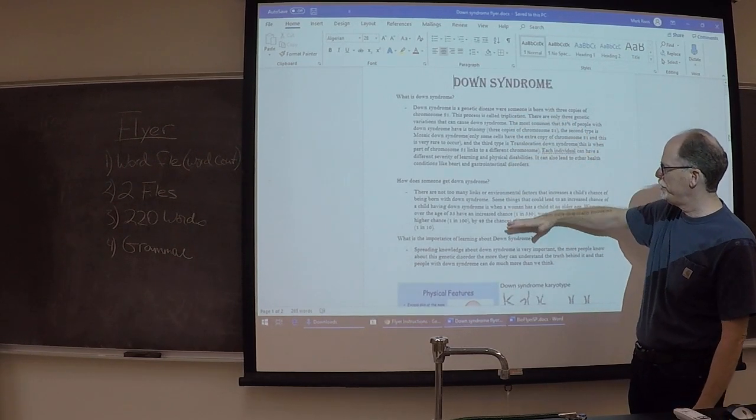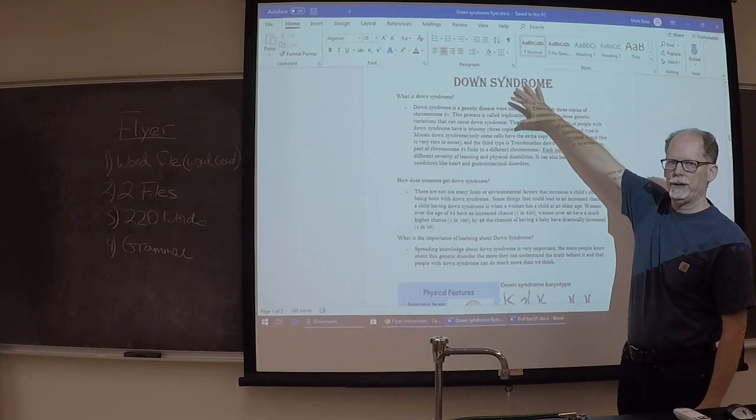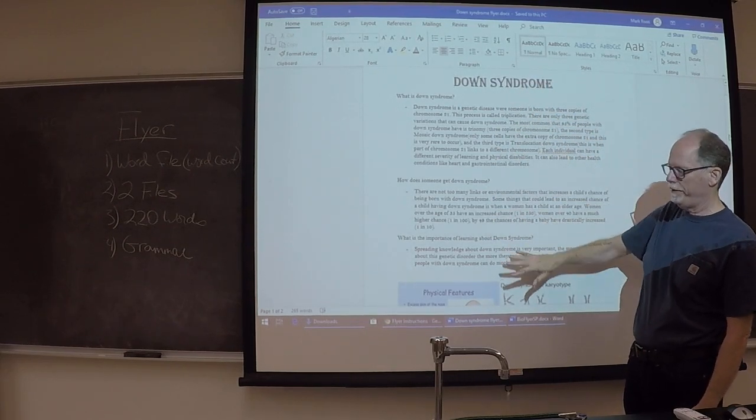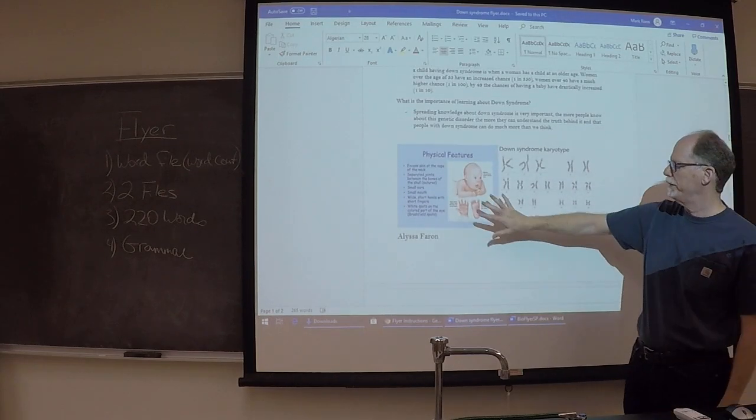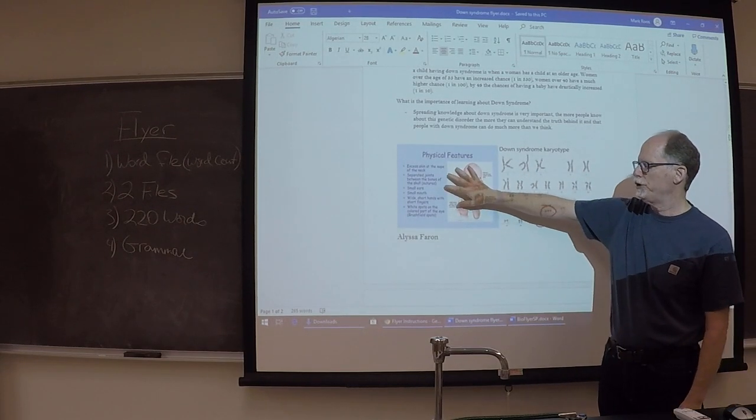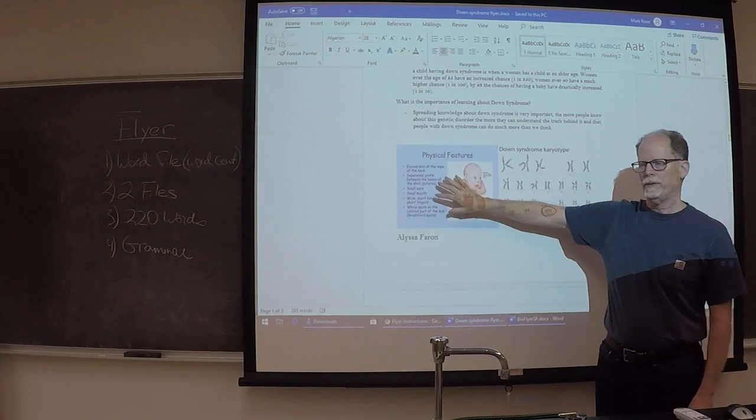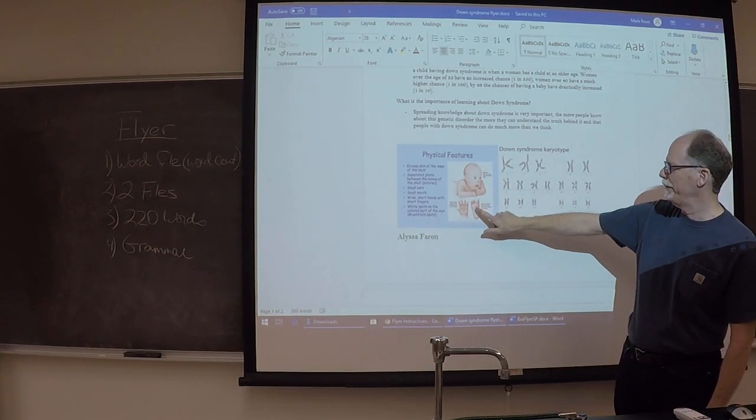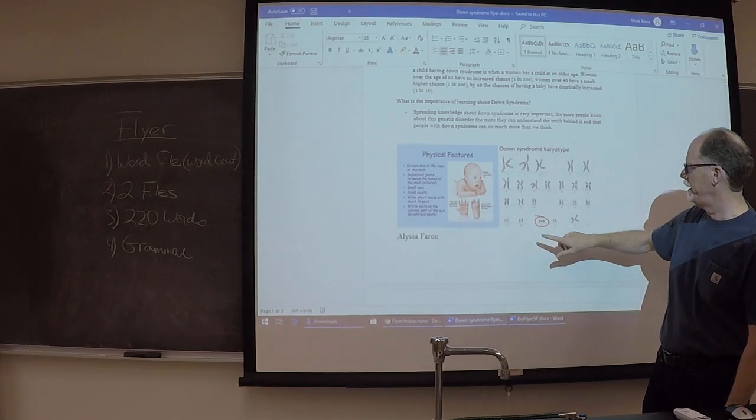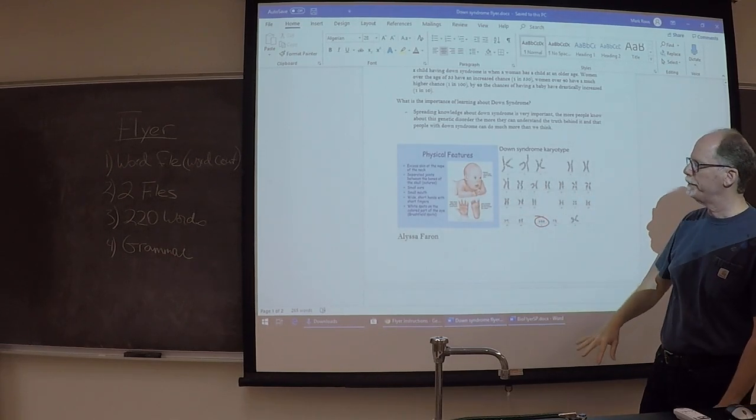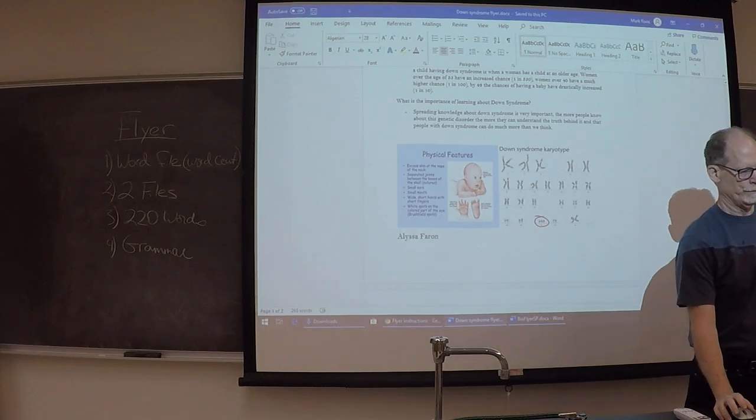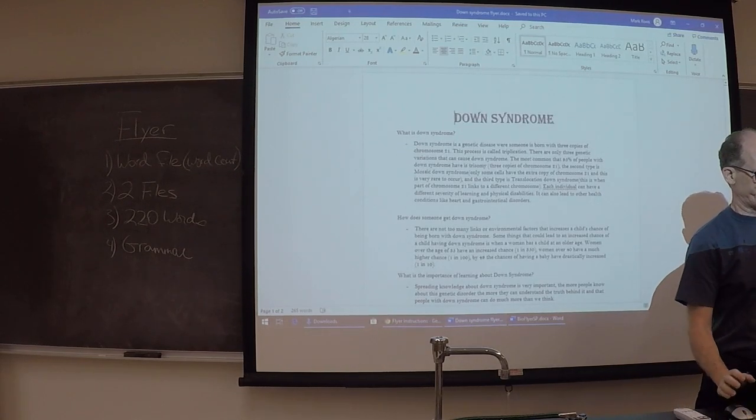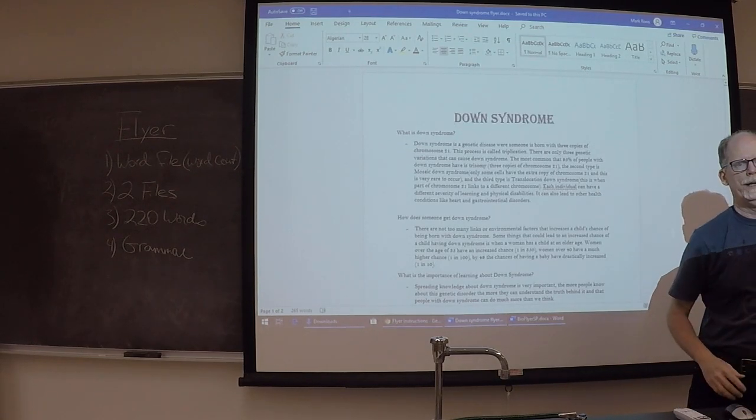Just put the information, whatever topic you pick, write all that down, and then at the bottom insert one or two figures. These figures should be scientific. It shows the symptoms of what the baby looks like, and then this is a karyotype. She did really well on this.